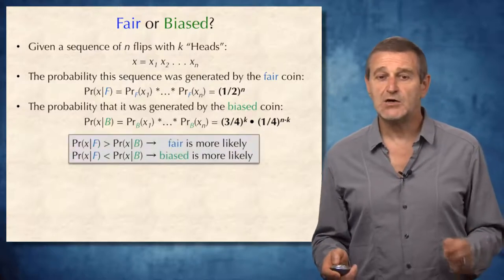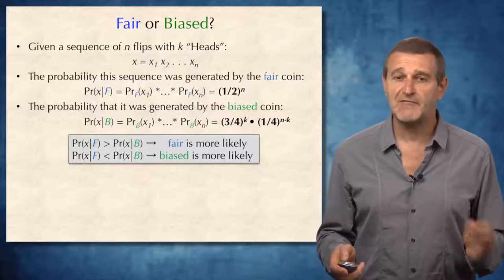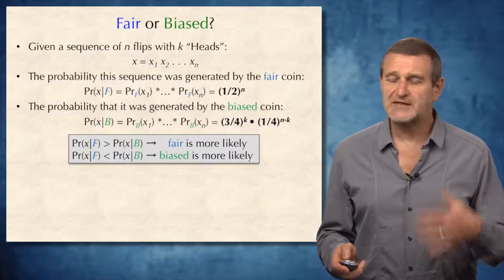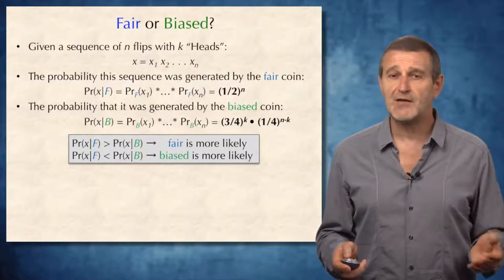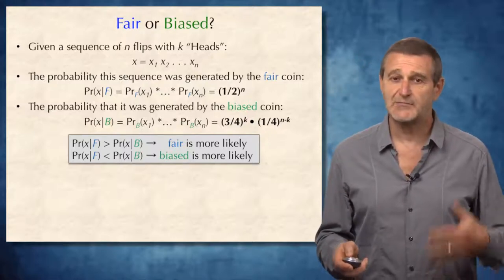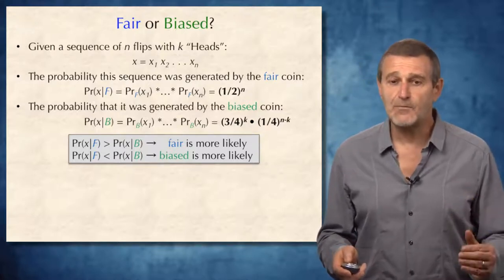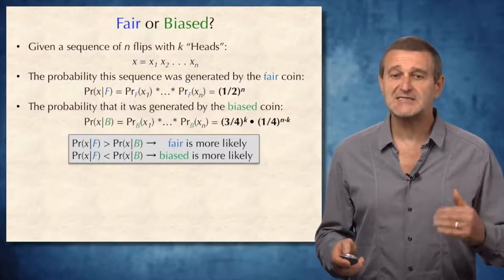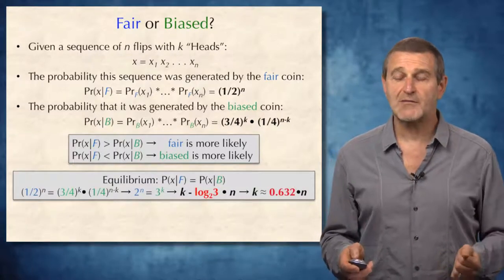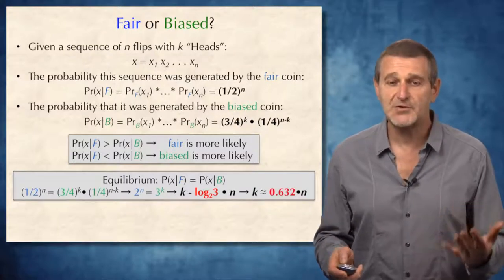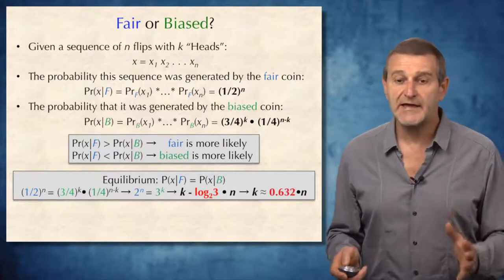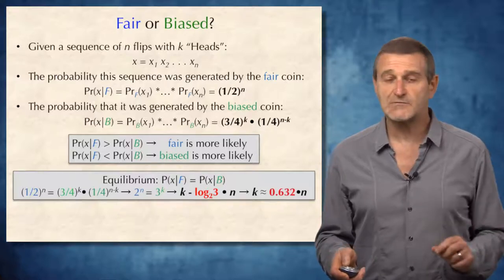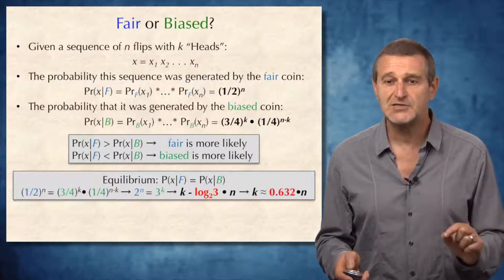To decide which coin is more likely, if the probability of x being generated by the fair coin (blue probability) is larger than the probability generated by the biased coin (green probability), the fair coin is more likely, and vice versa. At equilibrium — when blue equals green probability — we can compute that k equals log base 2 of 3, multiplied by n, or approximately 0.632 × n.